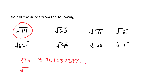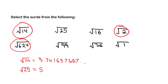Root 25 — some of you may already know this — equals five, so it is not a surd because it gives a whole integer value. Same with root 16. Root 2 gives a bunch of non-repeating decimals, so it is a surd. Root 624 is also a surd. Root 99 is also a surd. Root 36 equals 6, so it is not a surd. And root 1 equals 1, so it is also not a surd.